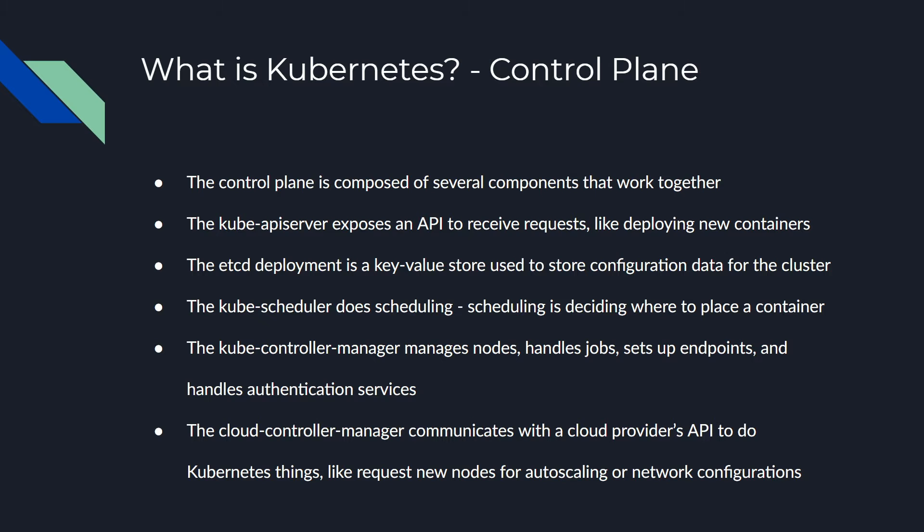Kubernetes also comes with etcd, which is a key-value store that uses both memory and disk for fast retrieval of data. Kubernetes uses it because it's a really good tool. Then there's the Kube scheduler — scheduling is basically just where to place a container. There are several ways in Kubernetes to tell it where to put a container: on the node using the least resources, on a node with a GPU, or a node with specific storage already allocated.